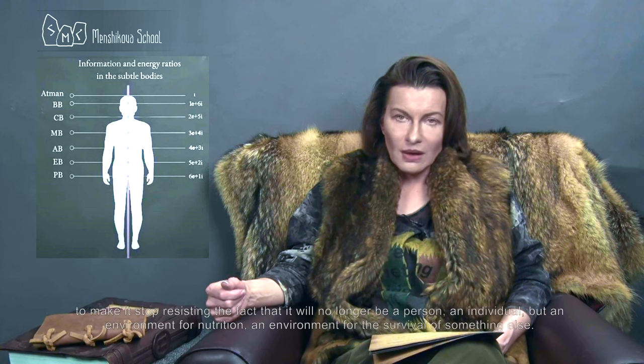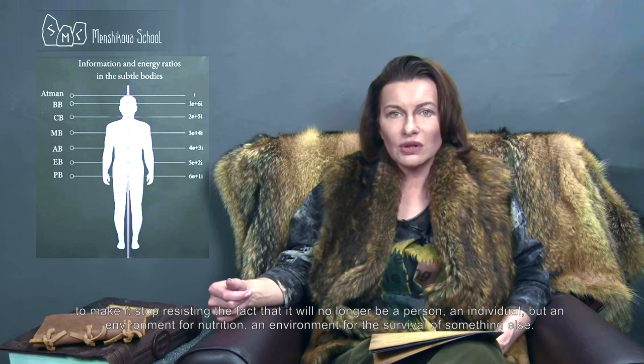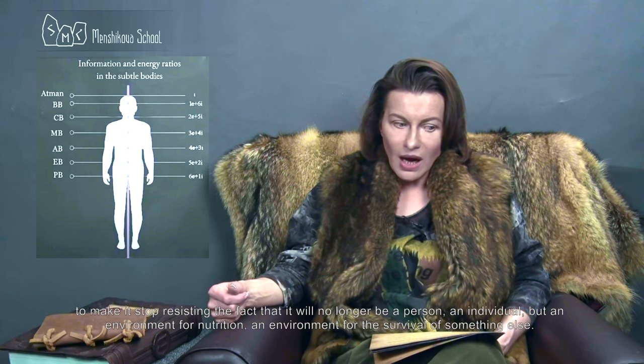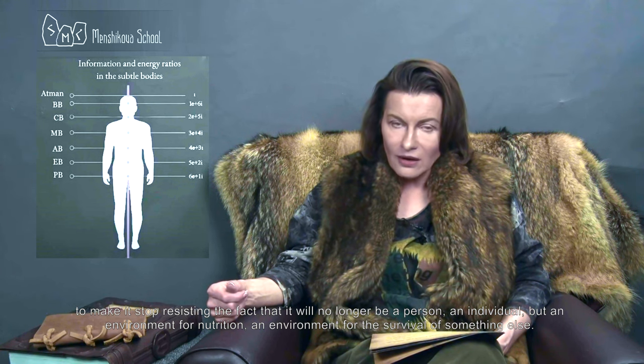A spoilage, or what is commonly called malediction, and in energo-informational sciences is called a program that aims to change a person for the worse. To cause a spoilage relates to a spoil, ruin — in the sense of worsening, making something more simple and simplified. That is, doing something to a consciousness in order to cause it to begin reducing its own existential volume, to make it stop resisting the fact that it will no longer be a person, an individual, but an environment for nutrition — an environment for the survival of something else.